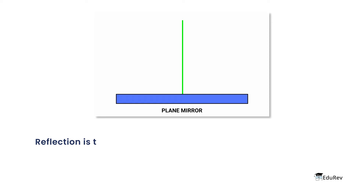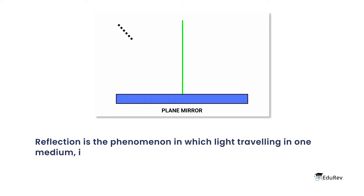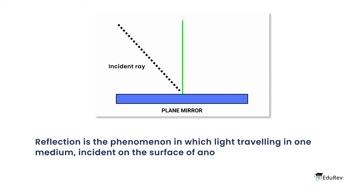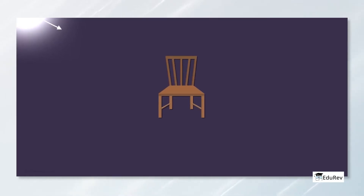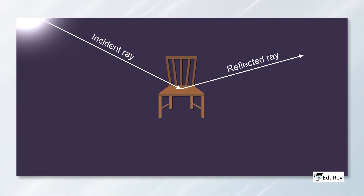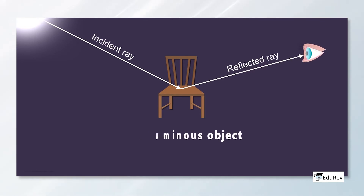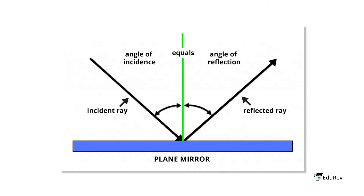Now let's talk about reflection of light. Reflection is the phenomenon in which light travelling in one medium, incident on the surface of another, bounces back to the first medium, obeying the laws of reflection. According to these laws, the incident ray, reflected ray, and the normal to the surface at the point of incidence all lie in the same plane. And the angle of incidence is equal to the angle of reflection.